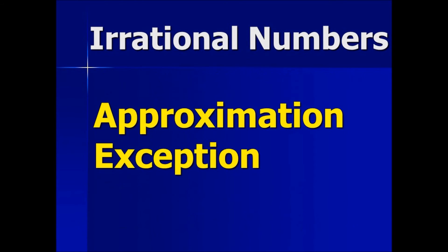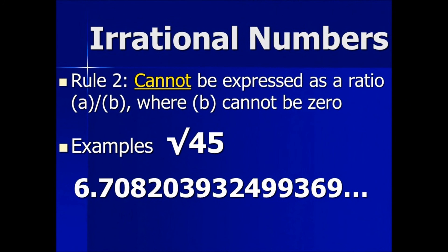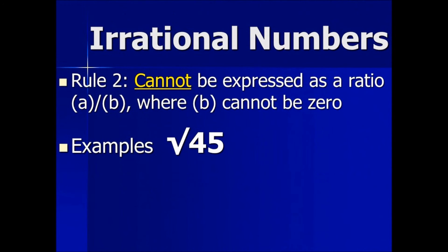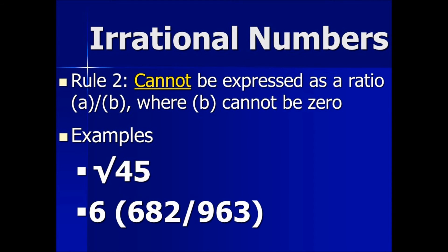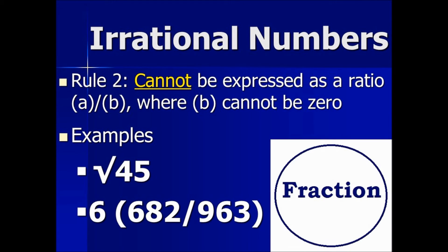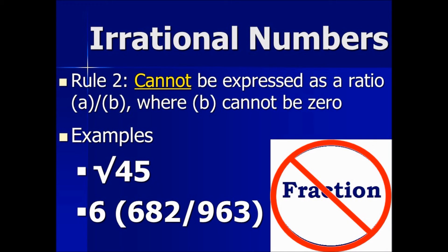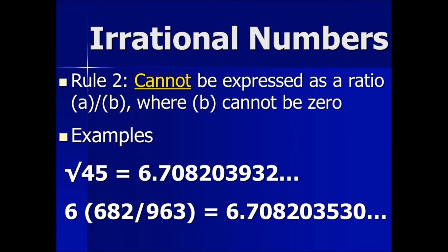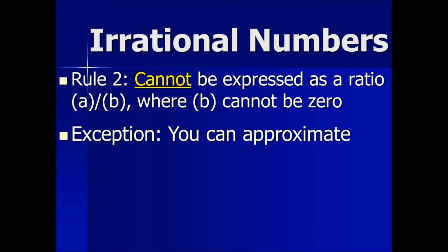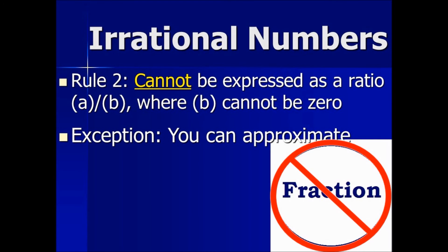Now, for every rule there is an exception. If you have a scientific calculator that has a fraction function, it will put the square root of 45 into a fraction form. However, if you evaluate both numbers, you can see that it is not the same number. So you can come to an approximation, yet by definition, an irrational number cannot be made into a fraction or ratio.